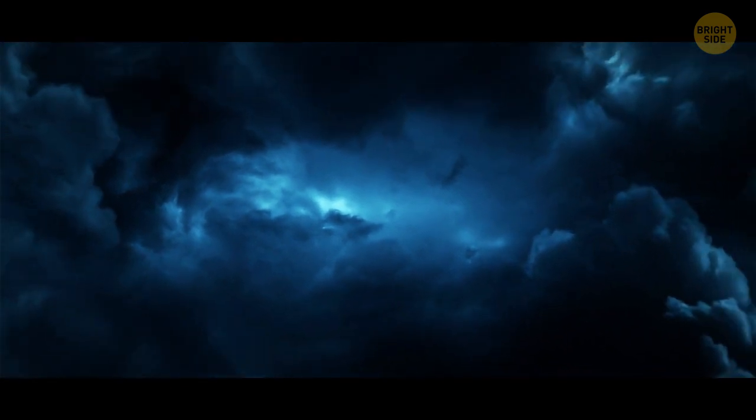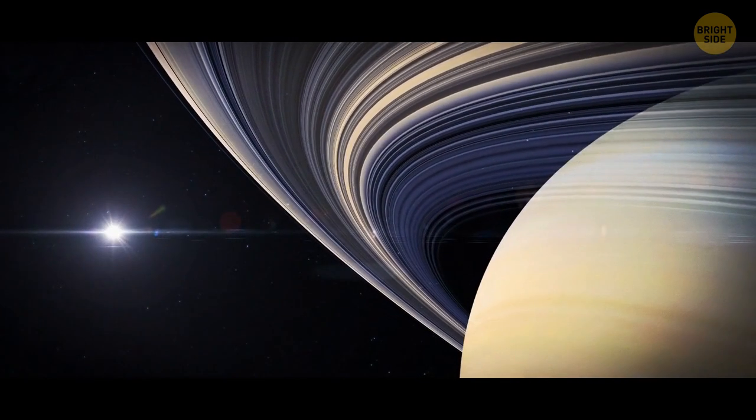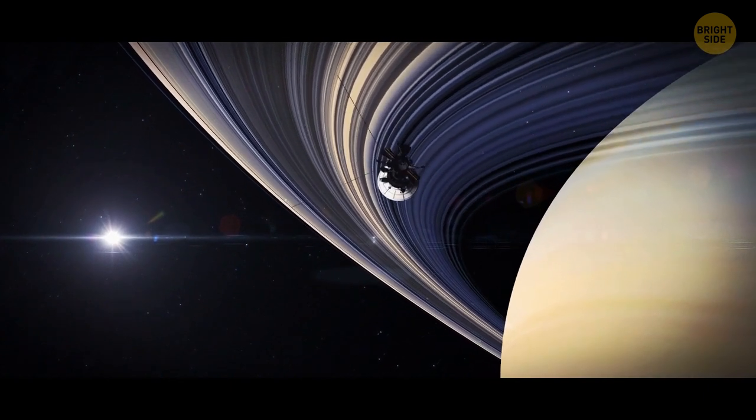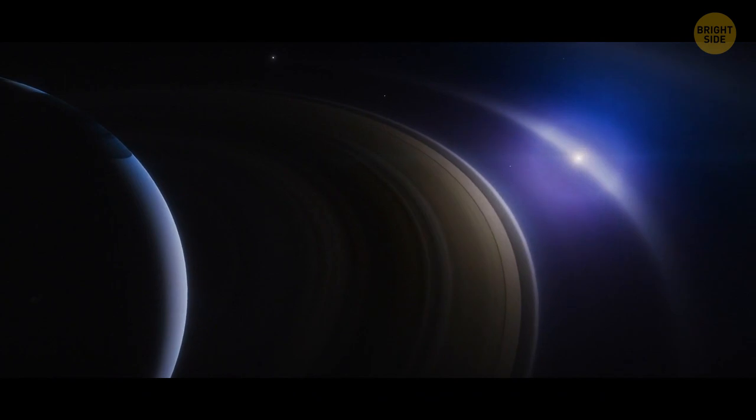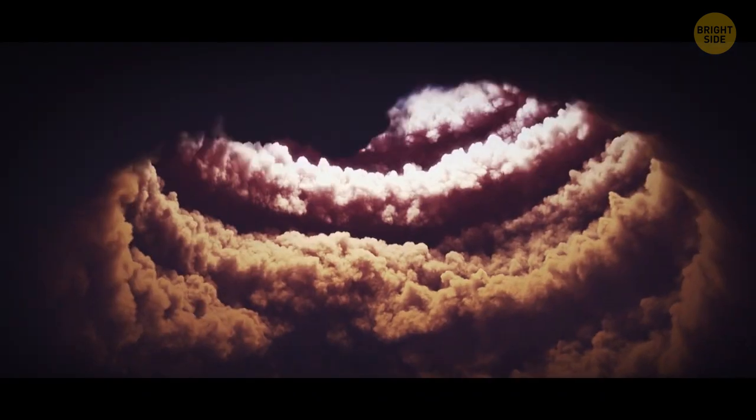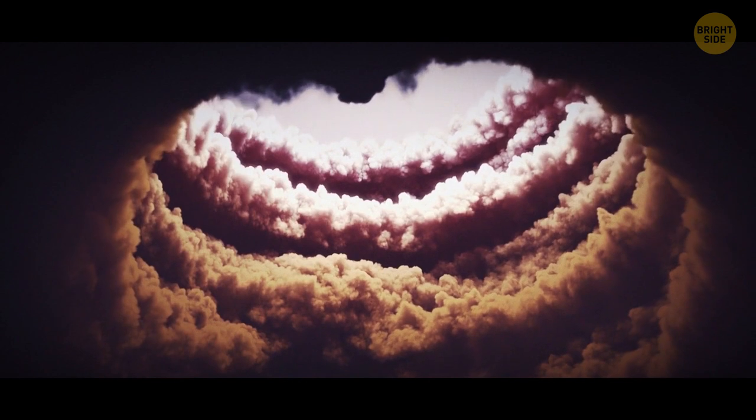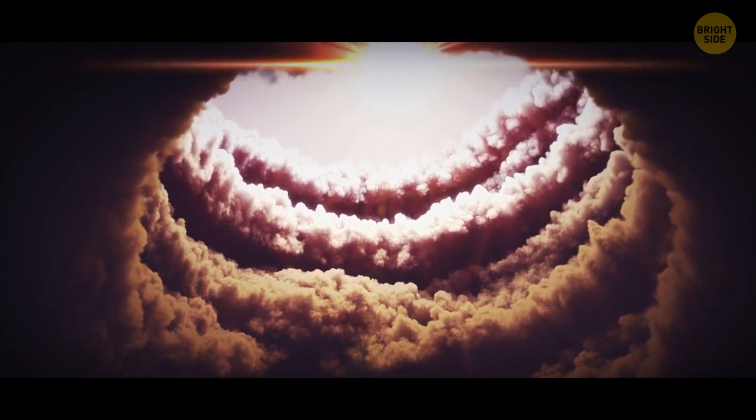That's because the Great White Spot is a huge system of thunderstorms. But the main mystery puzzling astronomers is where the storm gets its energy from. Some scientists think it might be powered by the Sun. Others disagree. They say the storm's cloud pattern only makes sense if there's an internal heat source that can power the winds.